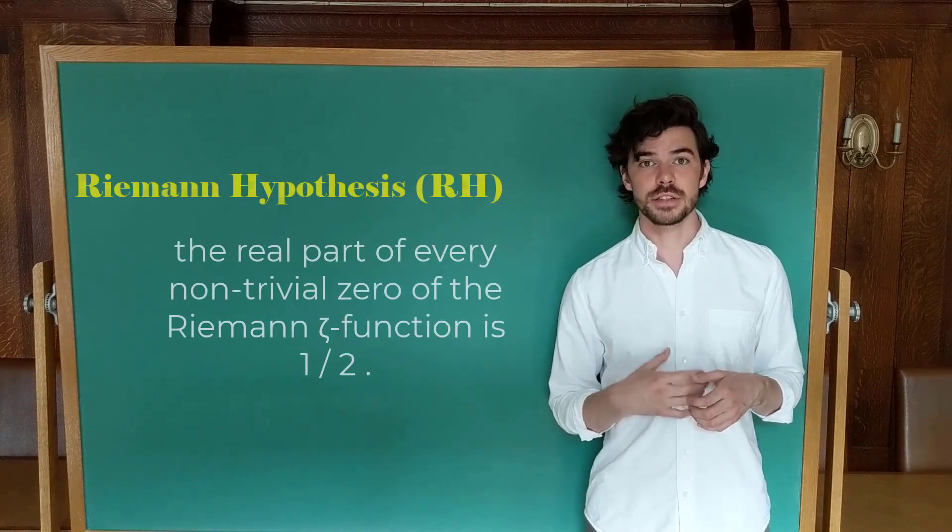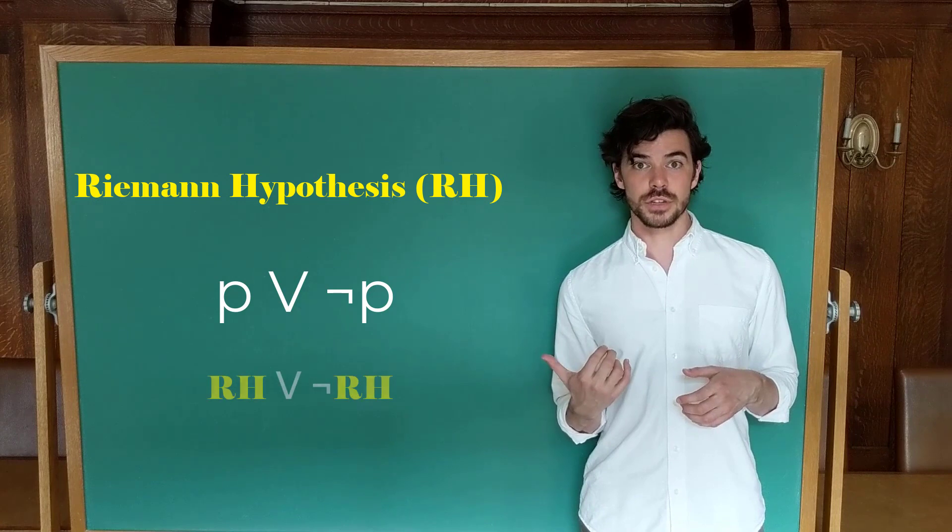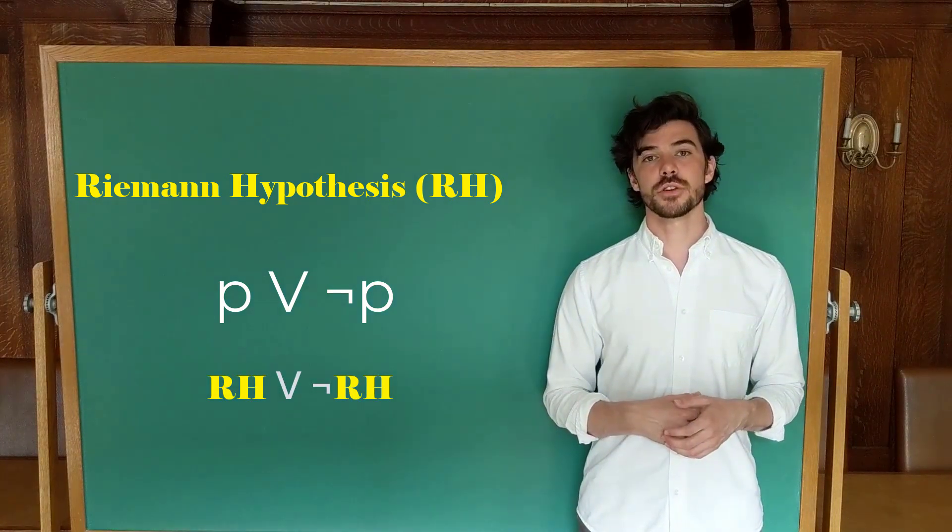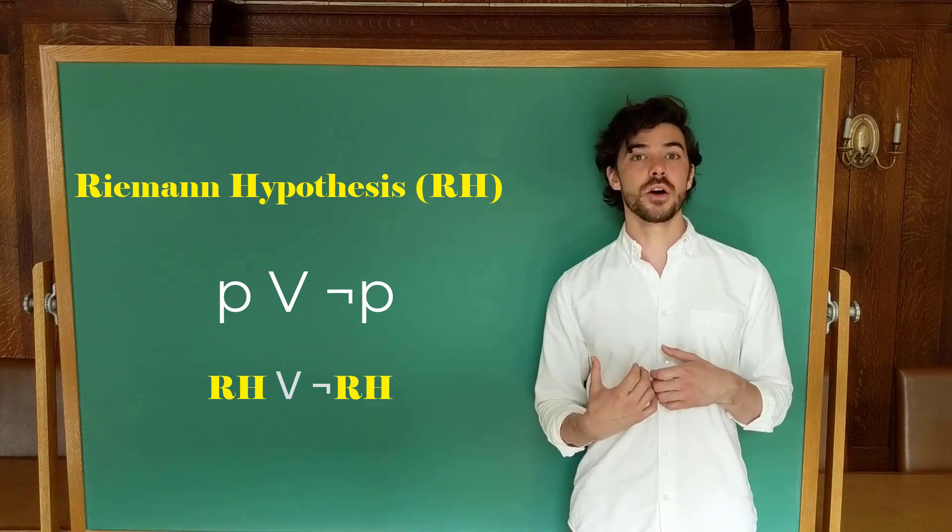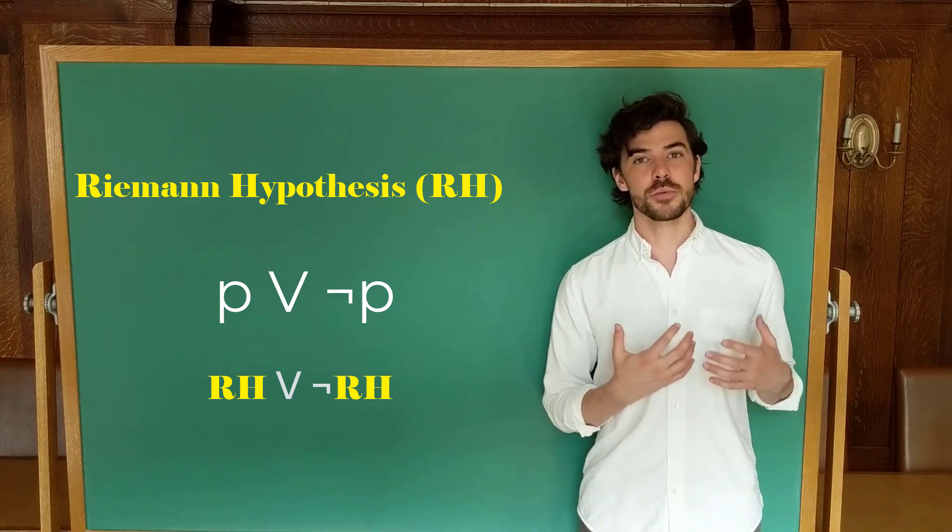Take, for instance, the Riemann hypothesis. If we read that as P or not P, we would say it's either true or false. That's fine on classical logic, but on intuitionistic logic, if you're saying we have a proof that P or we have a proof that not P for Riemann hypothesis, that's not true because we don't have a proof either way.